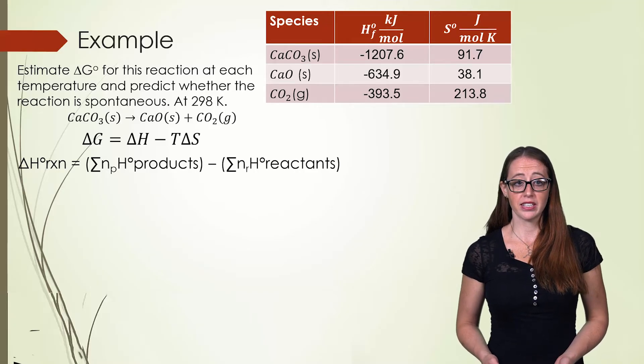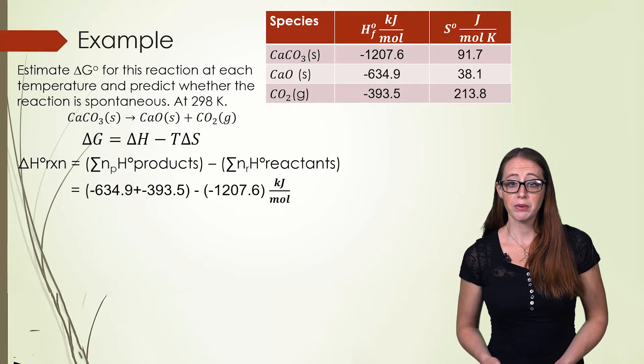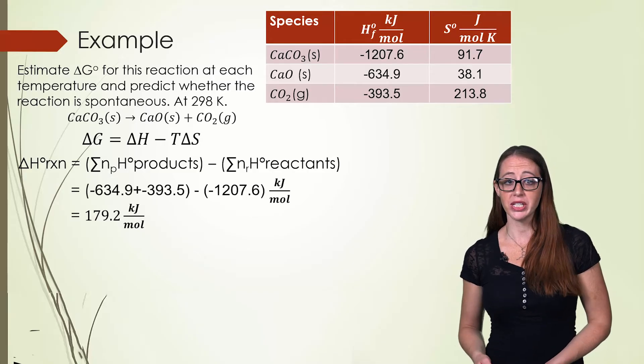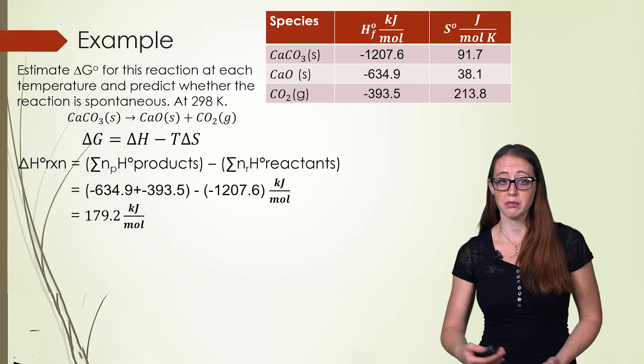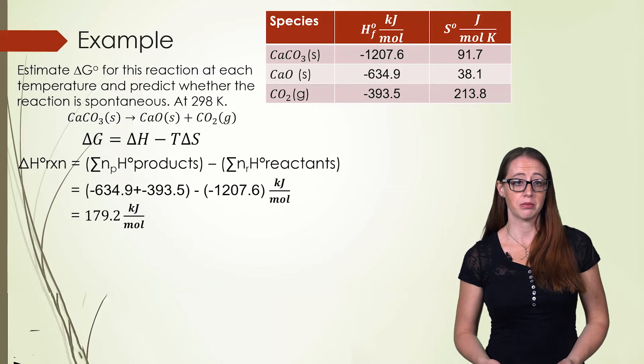If we fill in our ΔH of products and our ΔH of the reactants, we will get 179.2 kilojoules per mole. Be really careful to pay attention to the units here. We get kilojoules per mole.